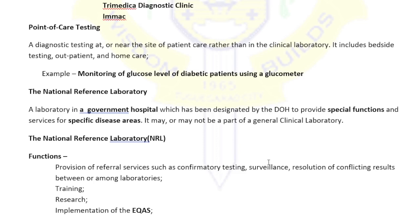For HIV, primary, secondary, and tertiary laboratories only do the screening test. To establish that a patient is truly HIV positive, the sample must be sent to the confirmatory laboratory. Similarly for drug testing — non-NRL laboratories only do the screening test, and if positive for drugs of abuse, the sample is sent to the confirmatory laboratory to establish that a person is really a drug user.